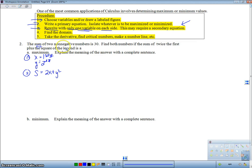Well, I know that the sum of the two non-negative numbers is 30. So on the side here, I know that x plus y equals 30. So let's just solve for y, 30 minus x. I'm going to go and plug 30 minus x over here, and I'm going to get s equals 2x plus 30 minus x squared.